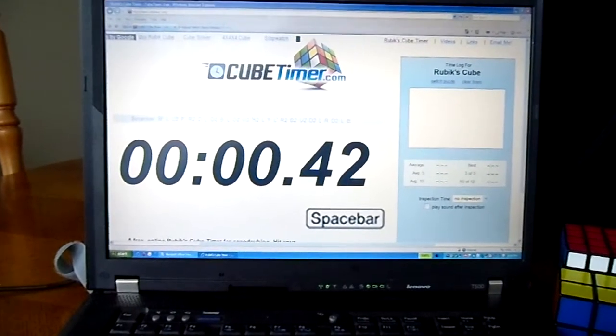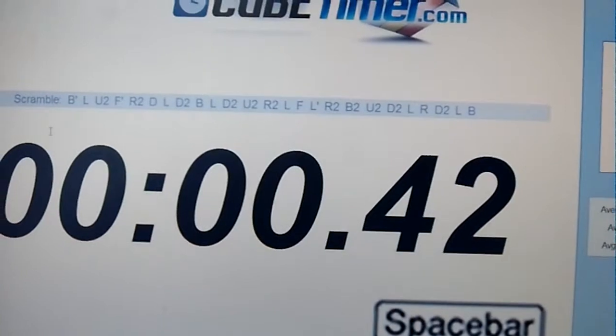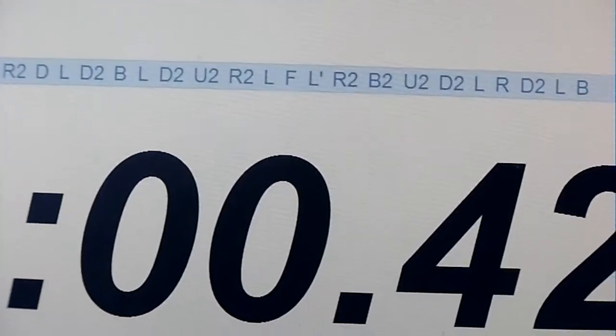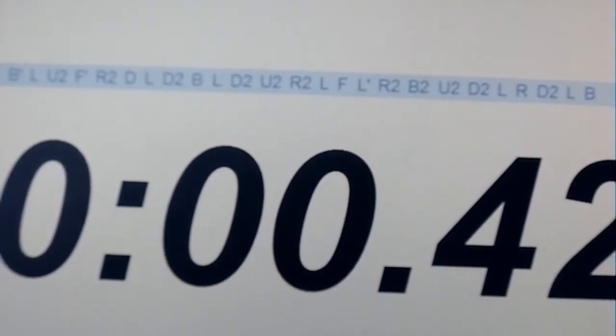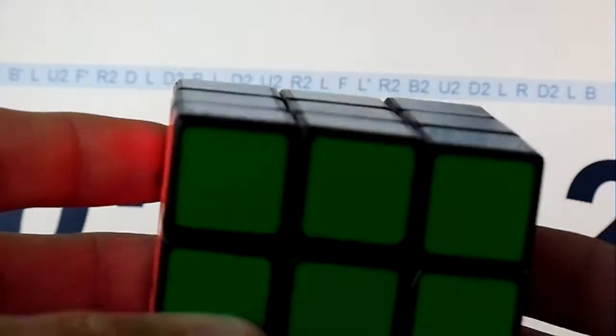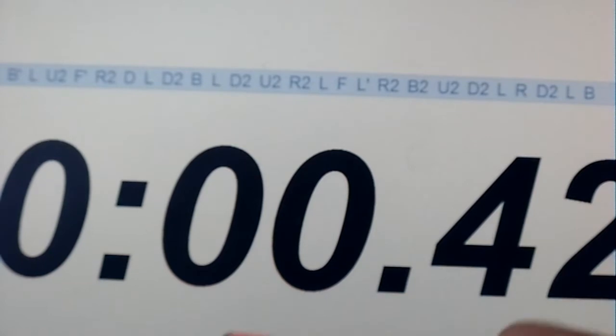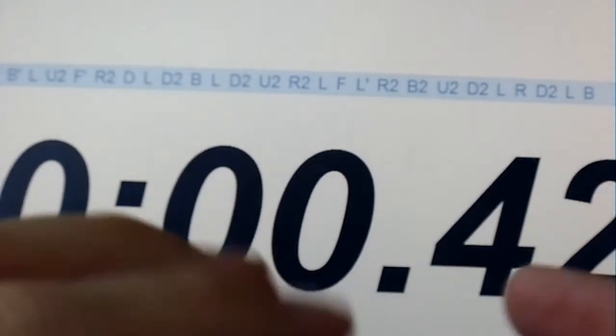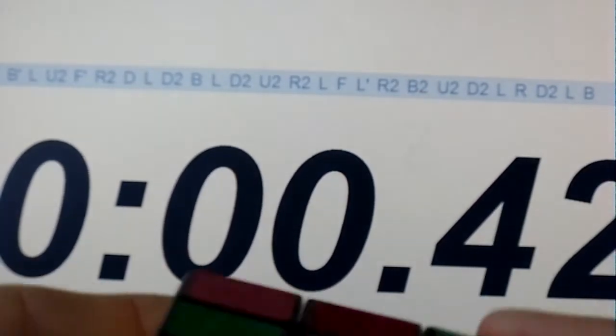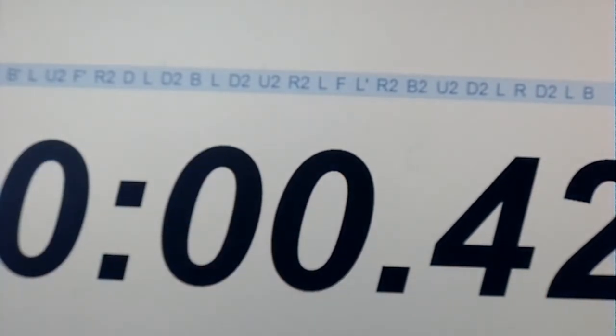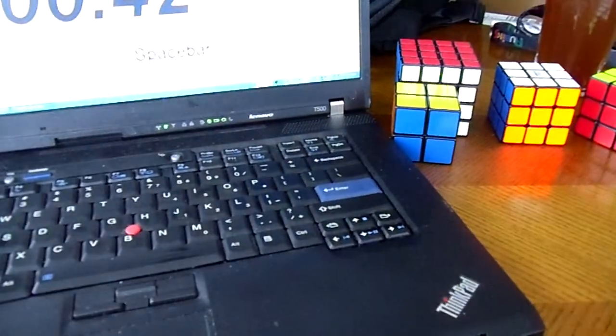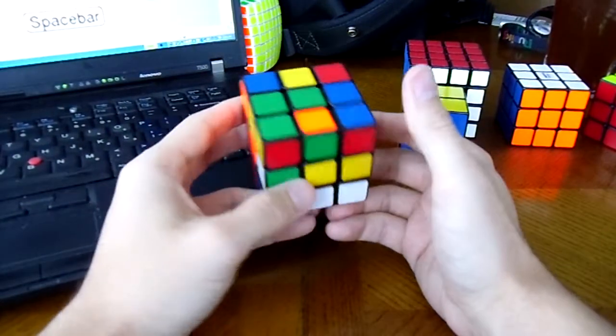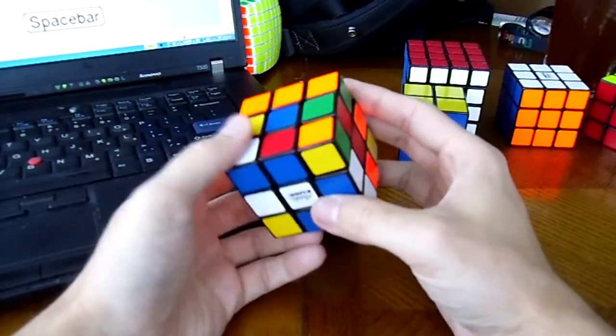If we take a look, so that's the scramble that I'm going to be using. As normal we go green front white up, that's competition standard. If you do the wrong scramble or whatever the case is and you don't get the exact same one, my apologies.